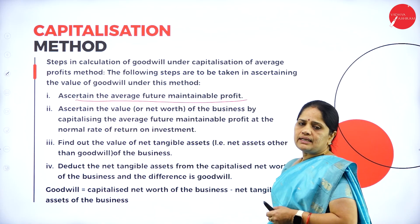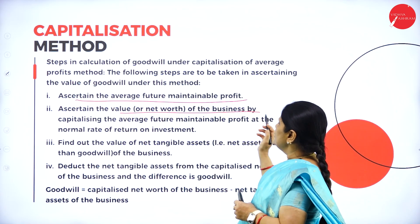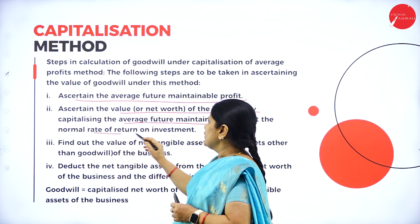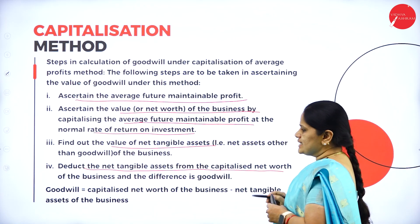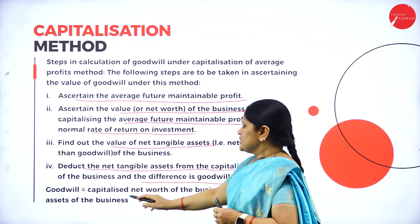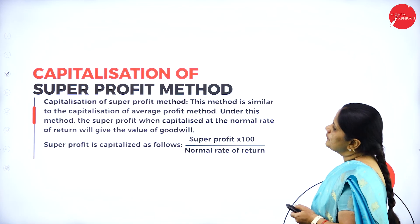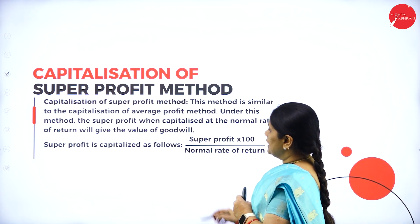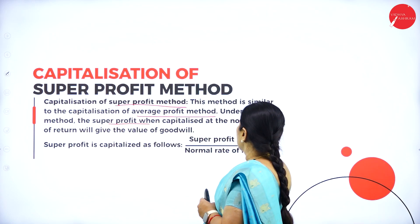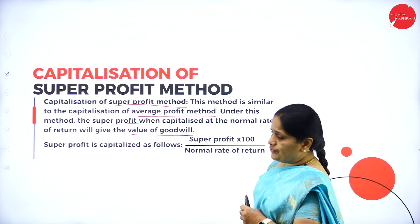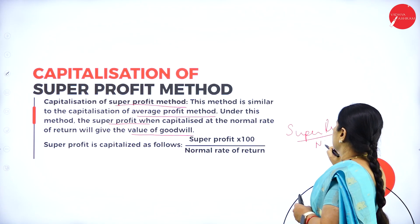The steps in the calculation of goodwill under capitalization of average profits method are: first, ascertain the average future maintainable profits; second, ascertain the value of the business by capitalizing the average FMP at the normal rate of return on investment; third, find out the value of net tangible assets; fourth, deduct the net tangible assets from the capitalized net worth. Goodwill equals capitalized net worth minus net tangible assets. The second method is the capitalization of super profit, where the super profit capitalized at the NRR gives the value of goodwill: super profit divided by NRR, multiplied by 100.